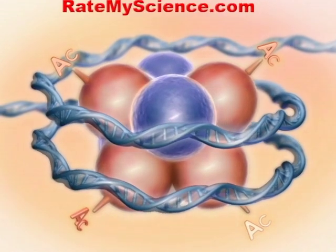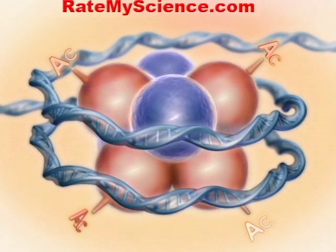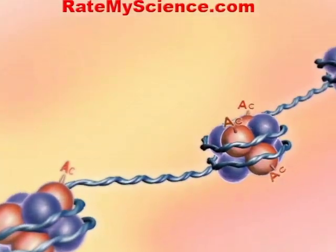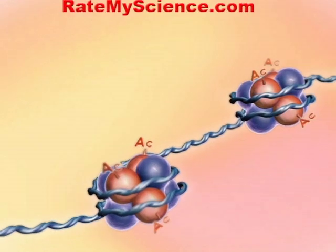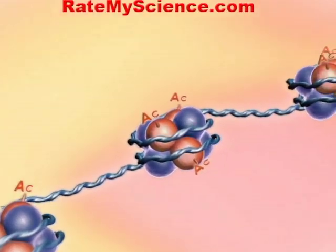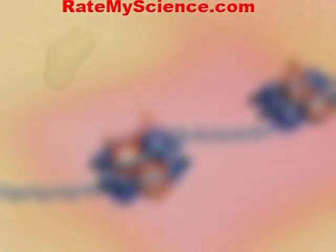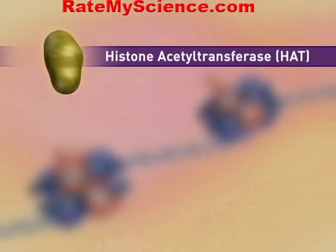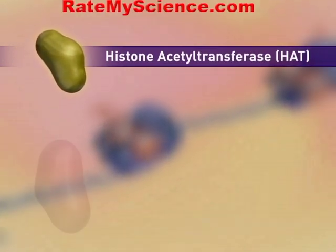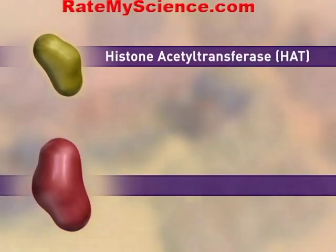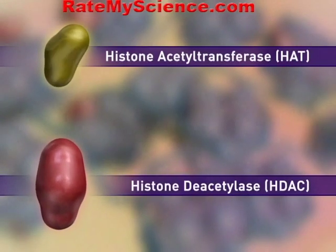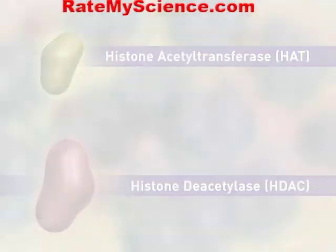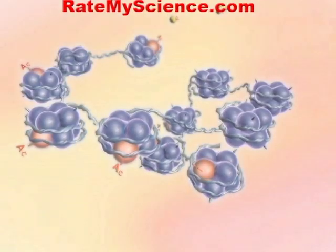Acetylation of histones is generally acknowledged to play a key role in the regulation of gene expression. Histone acetylation is controlled by the balance in the activity of two enzymes: histone acetyltransferase or HAT and histone deacetylase or HDAC.